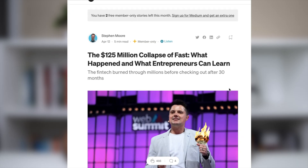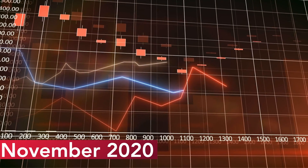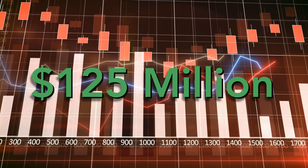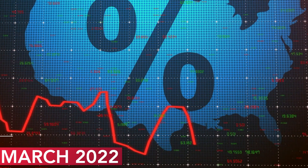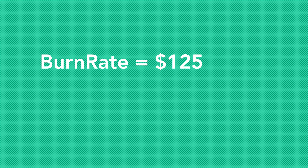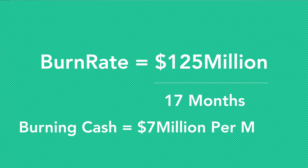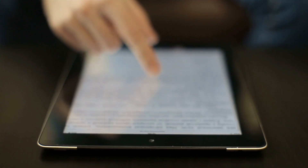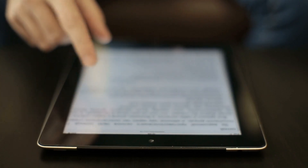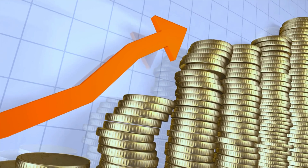One of the craziest stories about a startup's burn rate is from a company called Fast. In November of 2020, Fast raised $125 million from investors. By March of 2022, the company had completely shut down — blowing through $125 million in just 17 months. Dividing $125 million by 17 months means the company was burning roughly $7 million per month on average. According to Crunchbase, the average Series A is around $10 million, meaning Fast was burning almost an entire average Series A raise every single month.